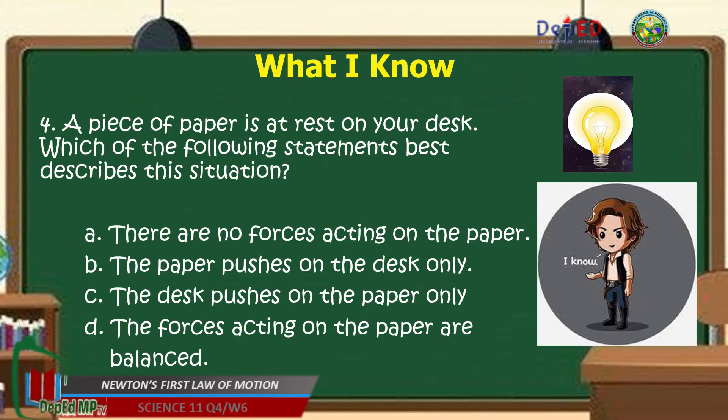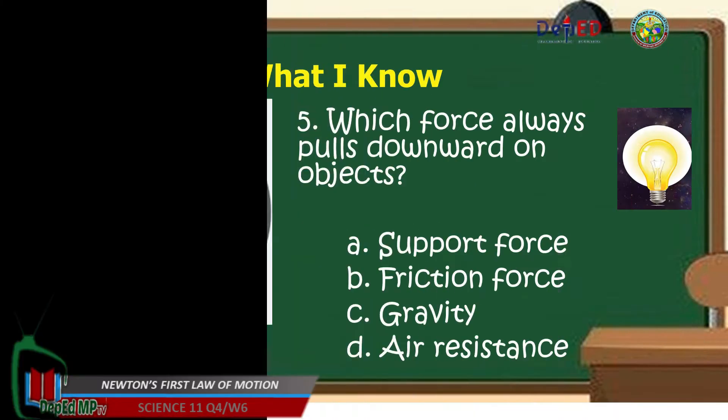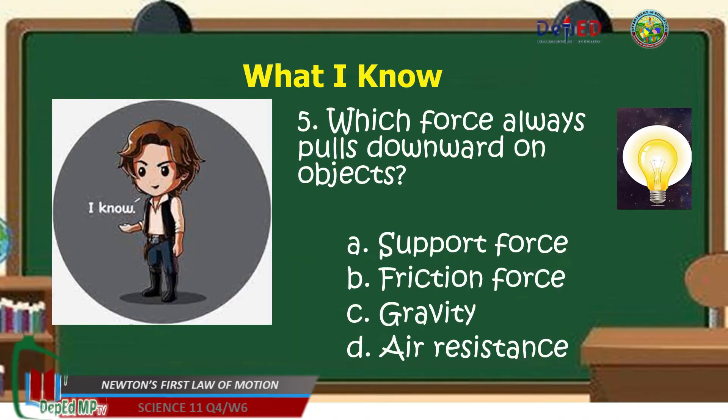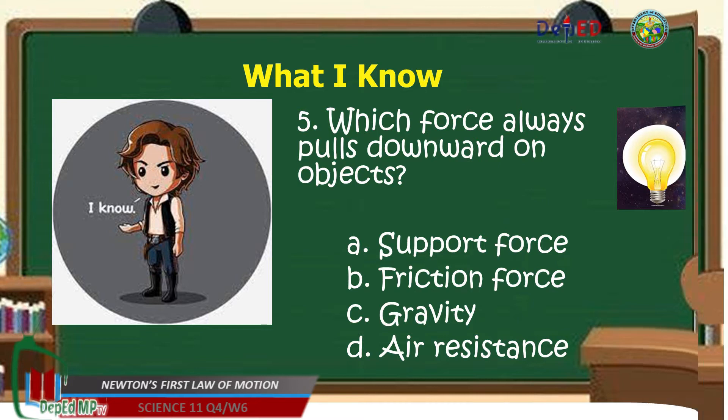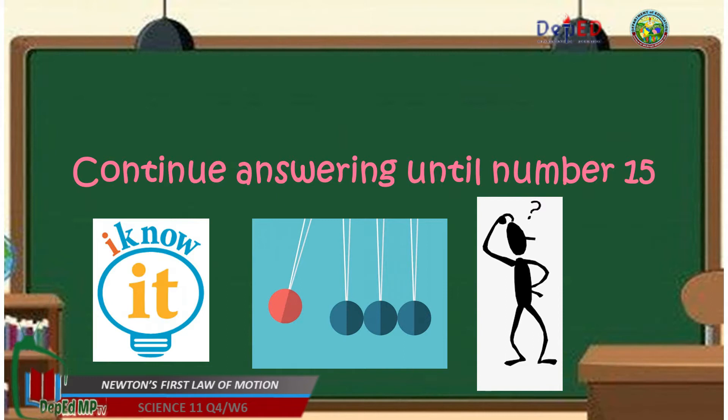Number 4. A piece of paper is at rest on your desk. Which of the following statements best describes this situation? A. There are no forces acting on the paper, B. The paper pushes on the desk only, C. The desk pushes on the paper only, D. The forces acting on the paper are balanced. Number 5. Which force always pulls downward on objects? Letter A Support force, Letter B Friction force, Letter C Gravity, Letter D Air resistance. Continue answering until number 15.